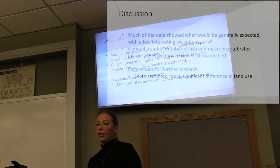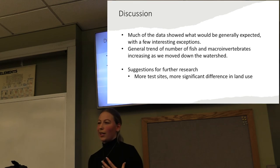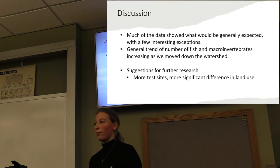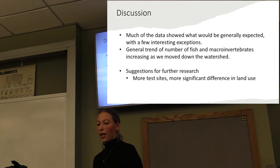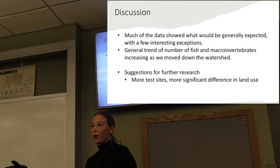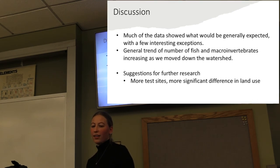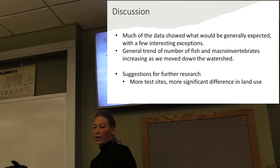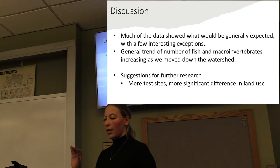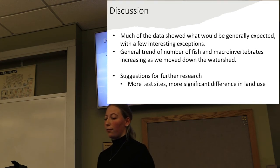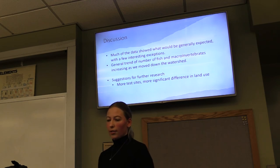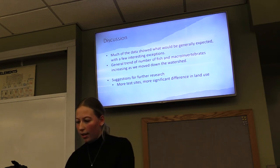Moving on to discussion — much of the data showed what we would have expected, without too many unusual findings. There was a general trend of fish and macroinvertebrate numbers increasing as we moved down the watershed. If I were to do this again, I would suggest going to more than three sites — we wanted to do more but things took longer than expected and the sun sets early, so we only got to three. I would also ensure greater variation in land usage among sites, really getting down toward the town where there's more agriculture and residential areas. And that's it.